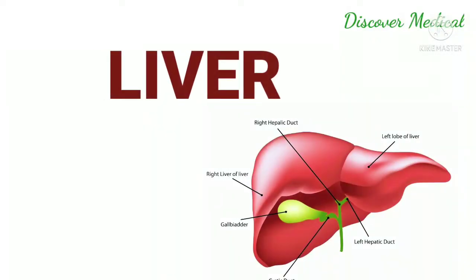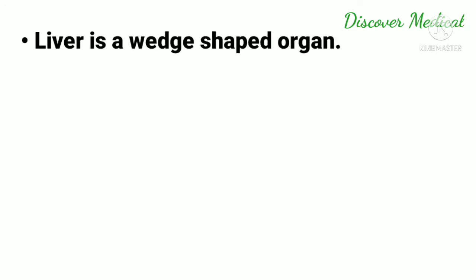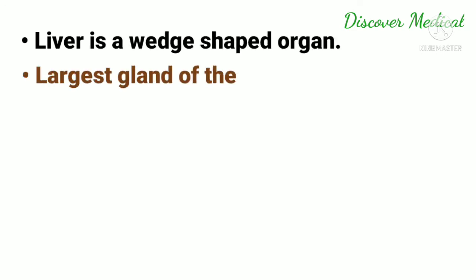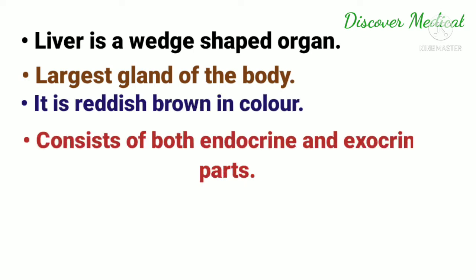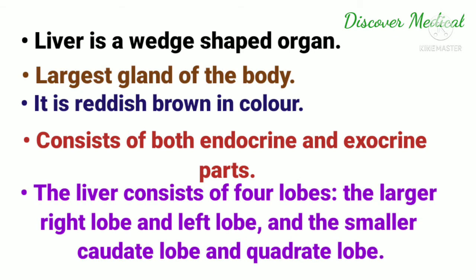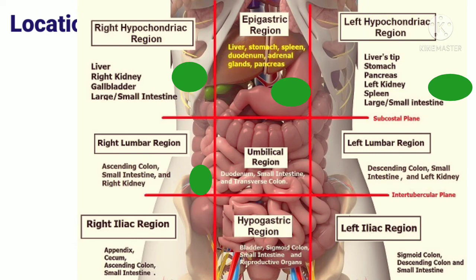Hey guys, welcome to our channel. Today we are going to see about the liver. The liver is a wedge-shaped organ and the largest gland of the body. It is reddish-brown in color and consists of both endocrine and exocrine parts. The liver consists of four lobes: the largest right lobe and left lobe, and the smaller caudate lobe and quadrate lobe.